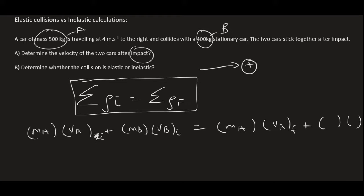I hope now you know how to use this formula really easily. And then mass of B, velocity of B final. Now we just fill things in. So mass A is 500, its initial velocity is 4. The initial mass of car B is 400, but it's not moving because it's stationary.